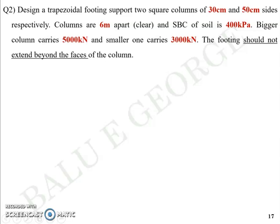Now that we have discussed the brief steps on how to design a trapezoidal combined footing, we will take up a numerical problem and solve it. You are asked to design a trapezoidal footing to support two columns of 30cm and 50cm size respectively. The columns are 6m apart, clear spacing, and the safe bearing capacity of the soil is given as 400kPa. The bigger column carries 5000kN and the smaller one carries 3000kN.